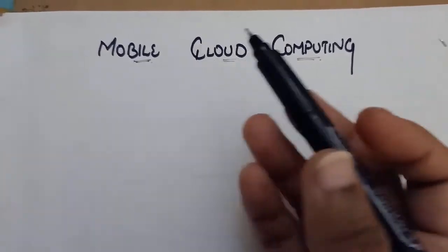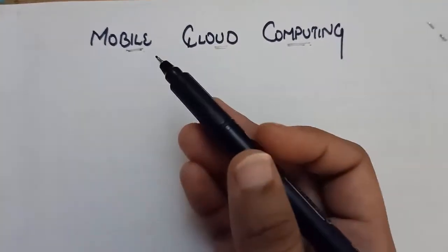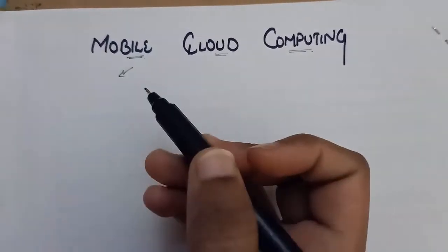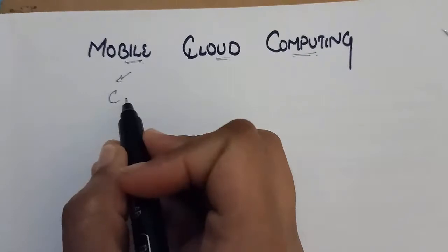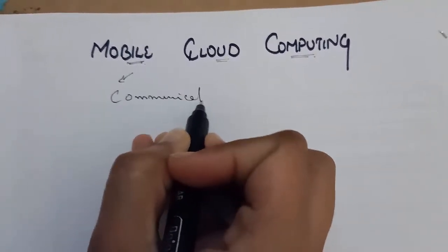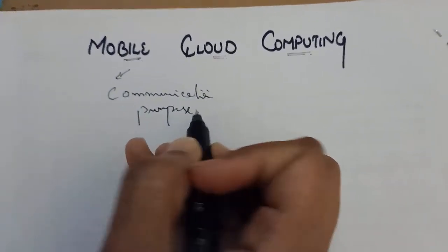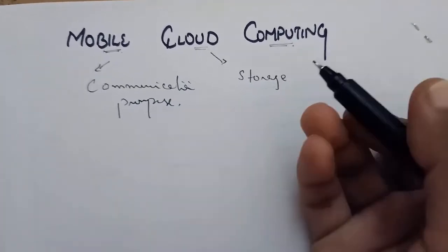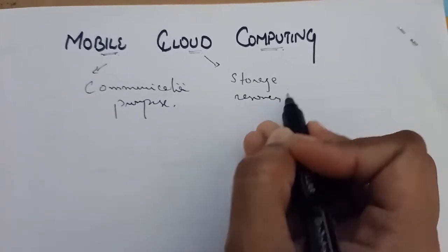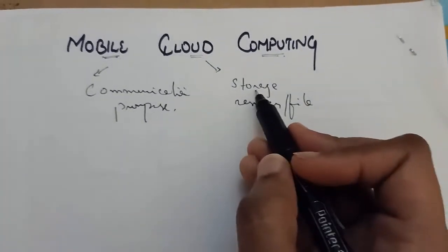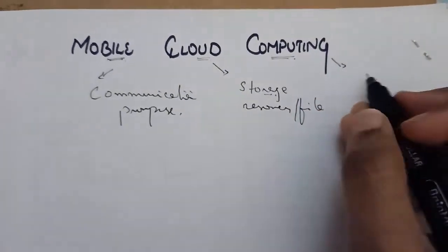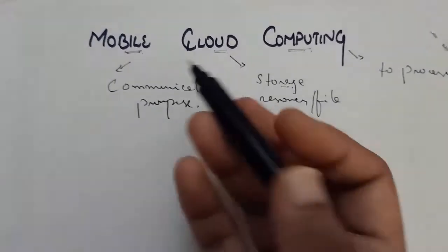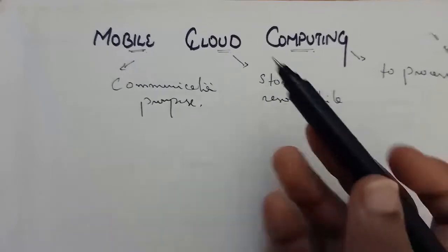Mobile Cloud Computing basically comprises of three words: mobile, cloud, and computing. If we see them separately — mobile is basically a device used for communication purposes, it is a portable device. Cloud is basically a storage space where you can store your resources or files. Computing means to calculate, process, or operate something.